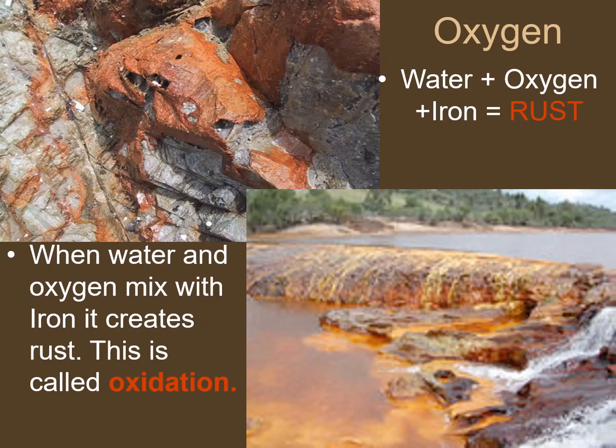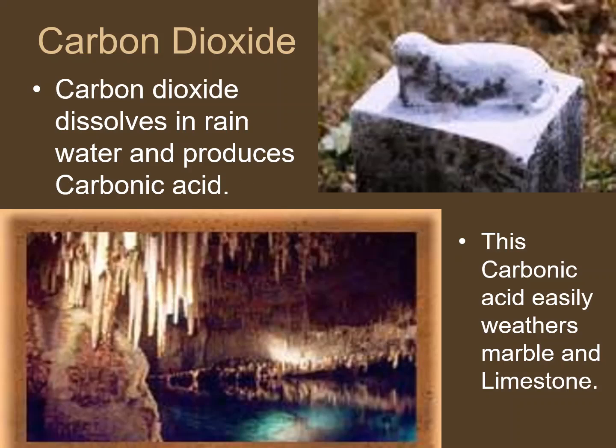The agents of chemical weathering include water, carbon dioxide, and oxygen. Regarding oxygen: when water and oxygen mix with iron, it creates rust. This is called oxidation. The chemical equation is: water + oxygen + iron = rust.